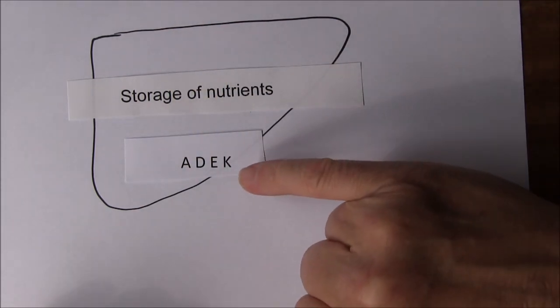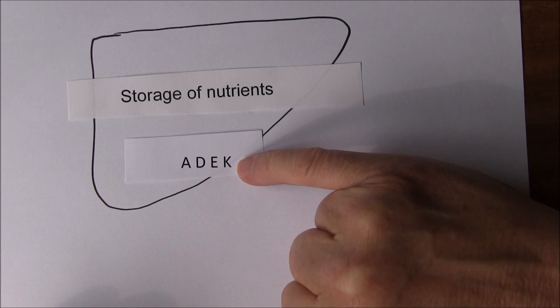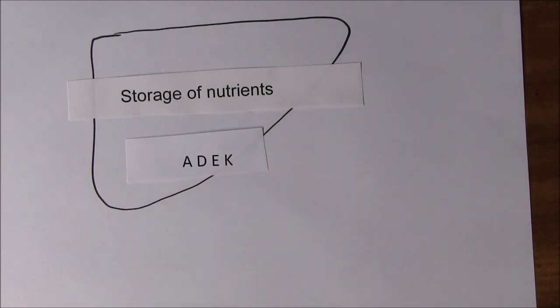The fat soluble vitamins are able to dissolve into the fat that's stored in the liver. So the liver is able to store these A, D, E and K, the fat soluble vitamins, ADEK. And these are stored as we've said associated with triglycerides in the individual hepatocytes of the liver.